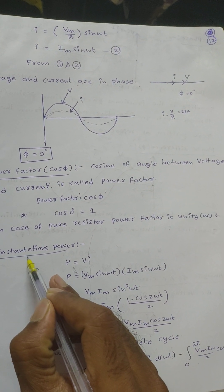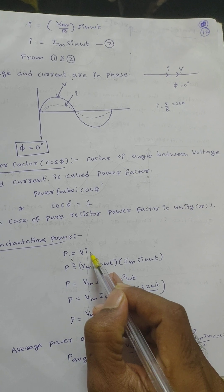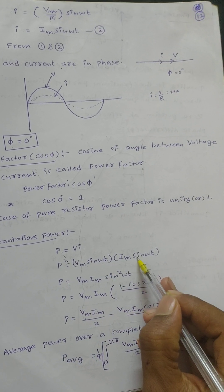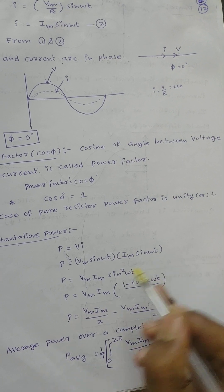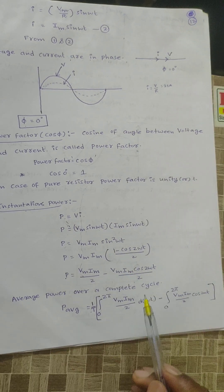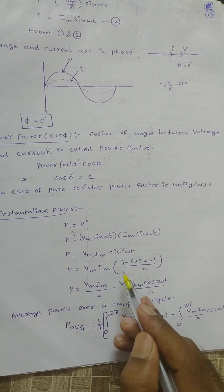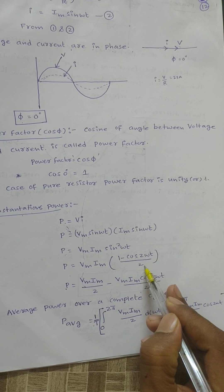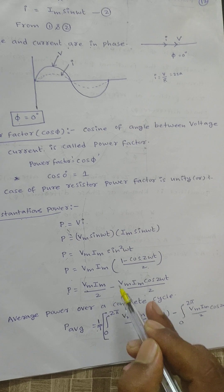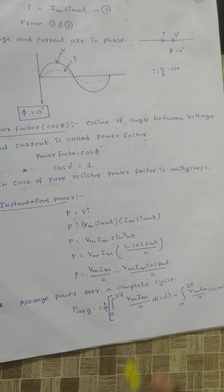Instantaneous power P equals V into I. In case of a resistor, V = Vm sin(ωt) and I = Im sin(ωt). So power P equals Vm × Im × sin²(ωt). Using the identity sin²(ωt) = (1 − cos 2ωt)/2, power becomes (Vm × Im)/2 minus (Vm × Im × cos 2ωt)/2.